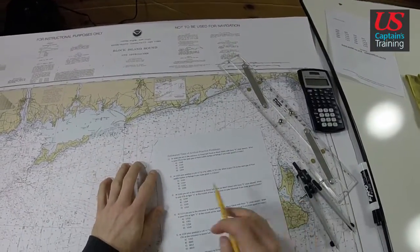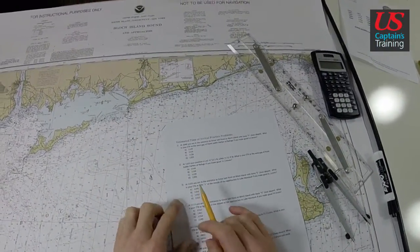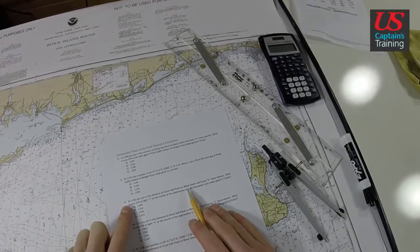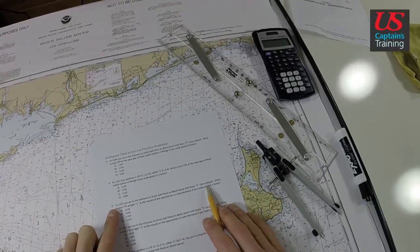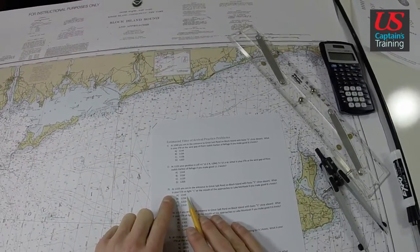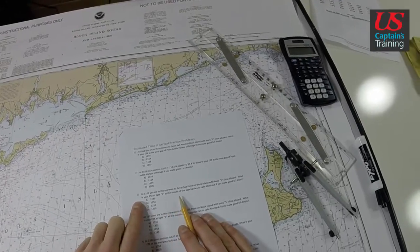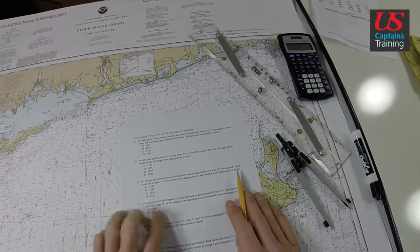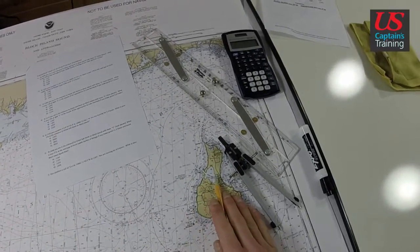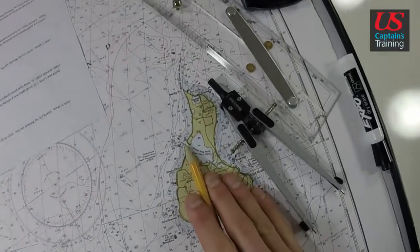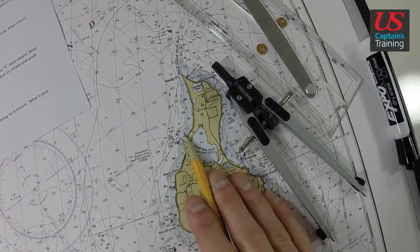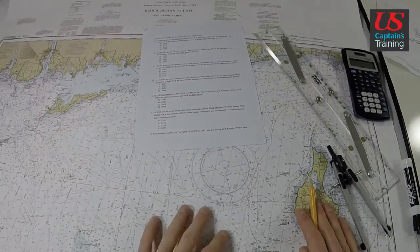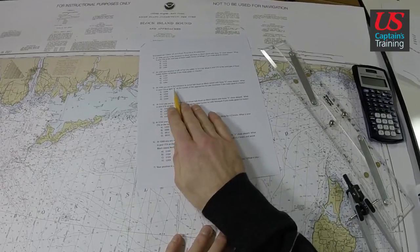Estimated time of arrival practice problem three says: At 1103 you are in the entrance to Great Salt Pond on Block Island with buoy 5 close aboard. What is your ETA at Light 1 at the mouth of the approaches to Lake Montauk if you make good 8.2 knots? We are starting here at Great Salt Pond, this is buoy 5, green can number five, and we're going to Light 1 at the mouth of the approaches to Lake Montauk.